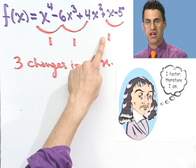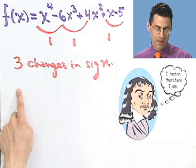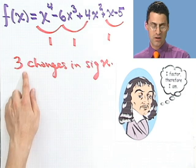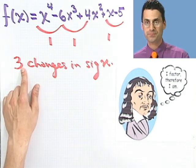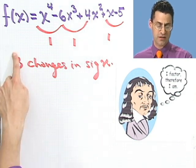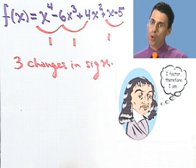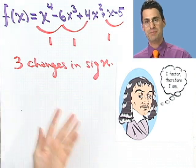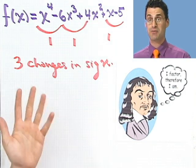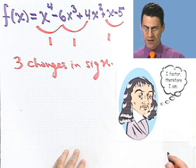Descartes' rule of sign. All you do, count the number of sign changes, and then the number of positive real roots will be this number, or this number minus some even number. In this case, since three is so small, either there are three positive real roots, or there are going to be three minus two positive real roots. There can't be three minus four positive real roots, because that would be a negative number. So that's out. Okay, what about for the negative real roots?